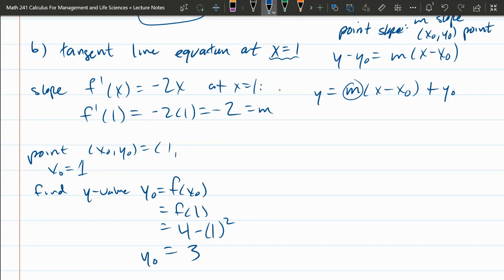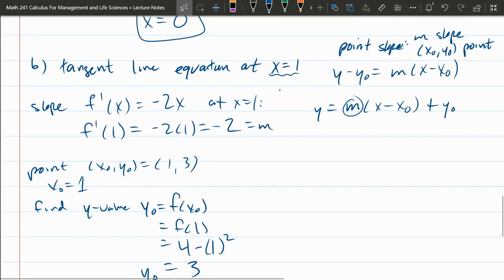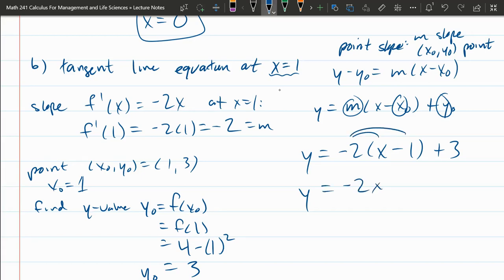So our x-naught, y-naught is 1, 3. And we're ready to now fill in this formula. So our slope was negative 2, x-naught was 1, y-naught is 3. If you really like mx plus b form, no problem. Distribute your slope. Negative 2x plus 2 plus 3. Negative 2x plus 5. However, this is the best form. So just use it.